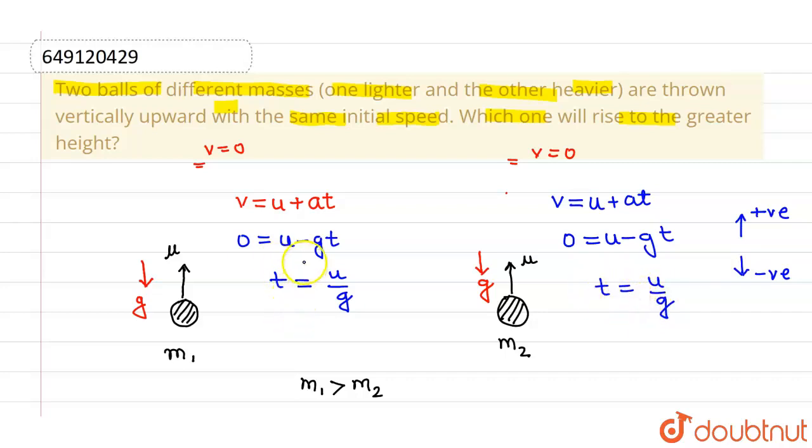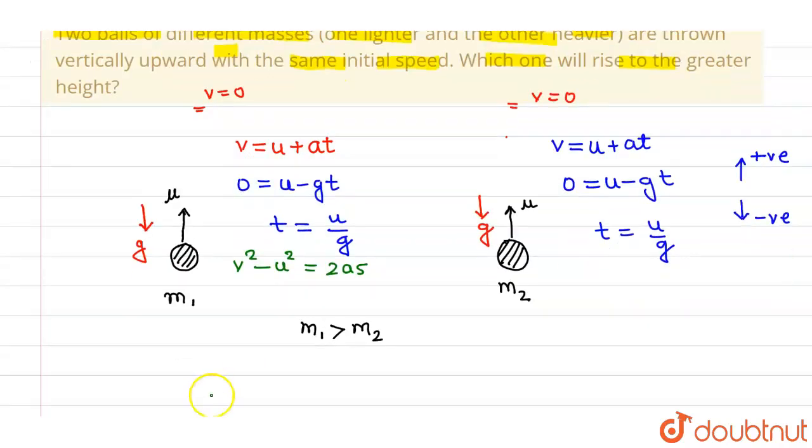So we will use another equation which is given by v square minus u square equals to 2as. Now let's say displacement is h max, the maximum height. So from this equation we can find out h max as v square minus u square by 2a. But here v square will be zero since final velocity is zero.